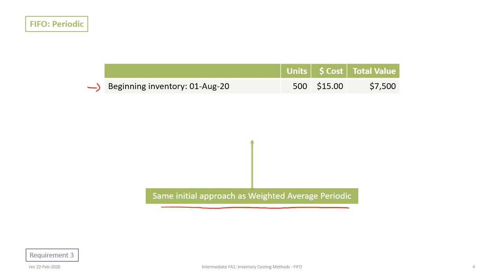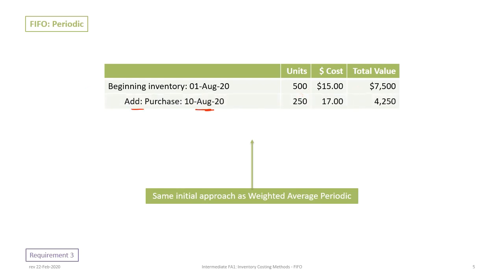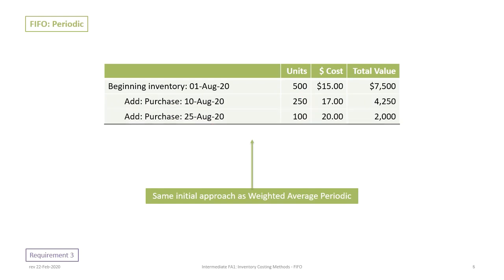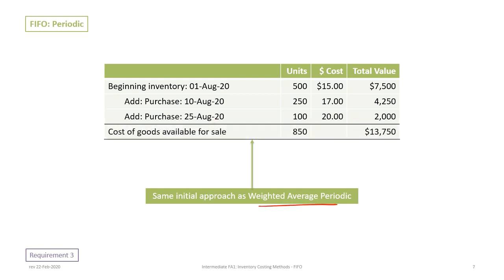We begin with our beginning inventory on August 1st: 500 units at $15 for a total beginning value of $7,500. Then our first purchase on August 10th: 250 units at $17 for $4,250. The second purchase on August 25th: 100 units at $20 for a total of $2,000. This gives us cost of goods available for sale, sometimes referred to as COGA, of 850 units at a total cost of $13,750.